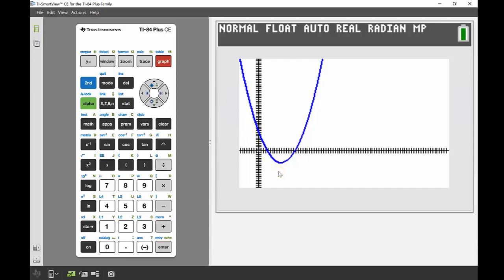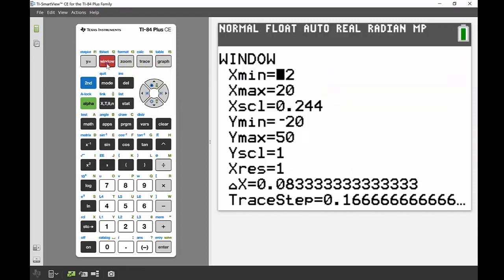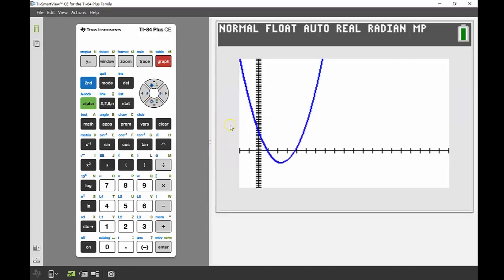I'll just show you what my window settings are. I've got them set from negative 2 to 20 and then from negative 20 to 50. I'm just going to change my x scale actually because that's not looking great, so I'm just going to change that to one. And there we go. We can see that graph looking really nicely there.